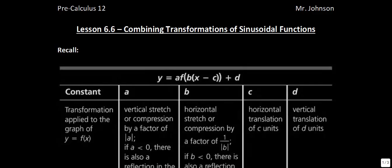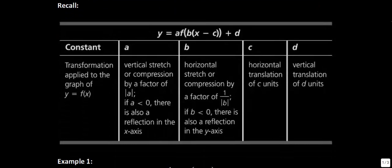The first thing I want you to recall is what you know about transformations. If we have a function a·f(b·x − c) + d, let me remind you what all these different things do. A is your vertical stretch or compress. B is your horizontal stretch or compress — remember we take the reciprocal of that one. So if you see a number greater than 1, it actually means it's going to be a compression; if you have a number between 0 and 1, it's going to be a stretch.